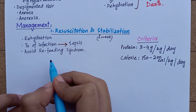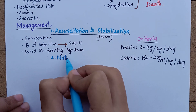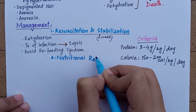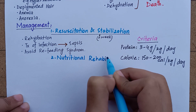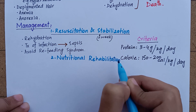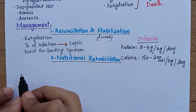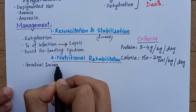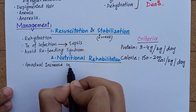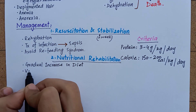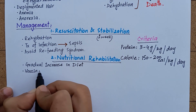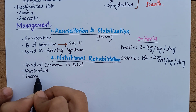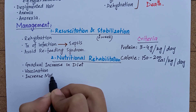The second phase of management is nutritional rehabilitation. After initial resuscitation, when the child's appetite begins to return, you can gradually increase the caloric intake. Vaccination to prevent further episodes of infection and increased motor activity are also part of nutritional rehabilitation.